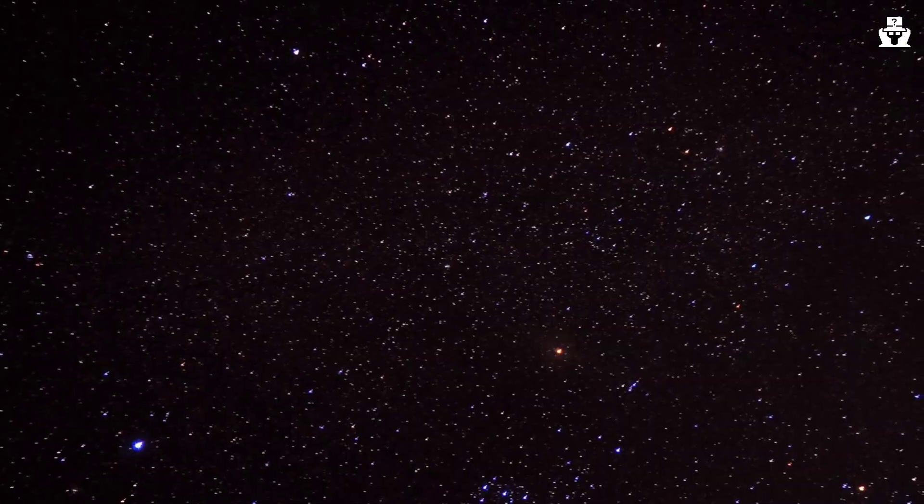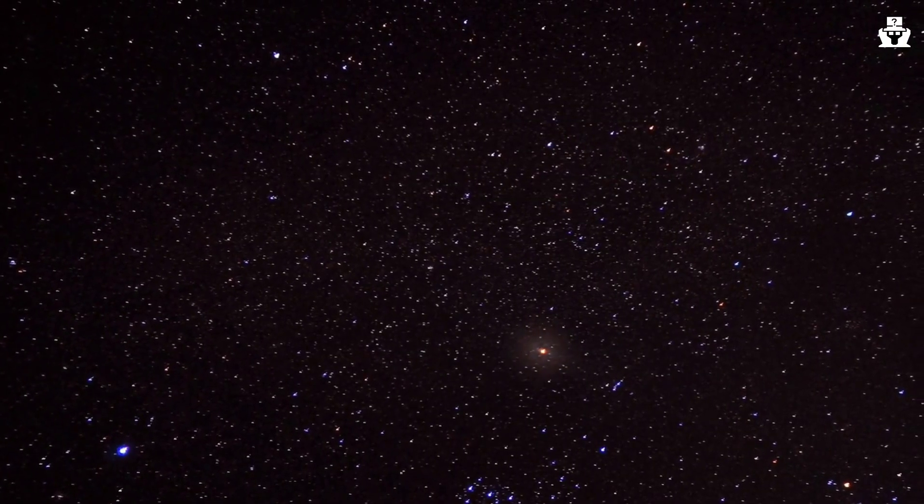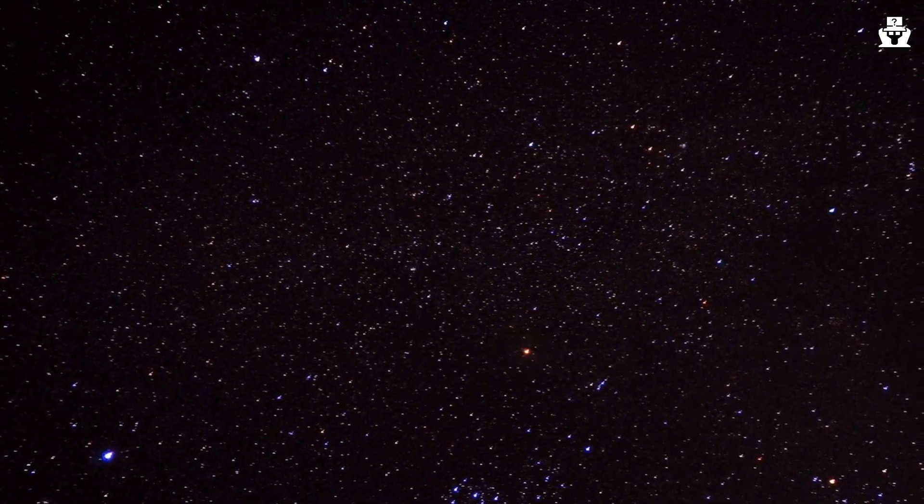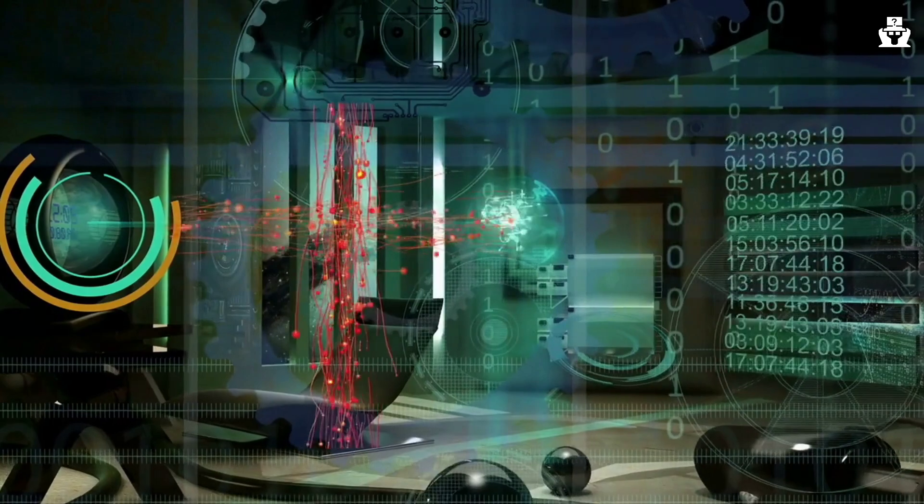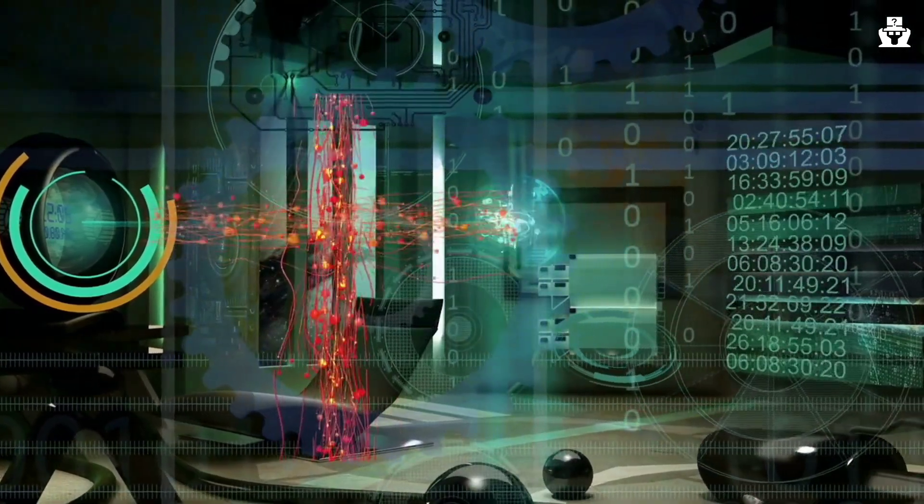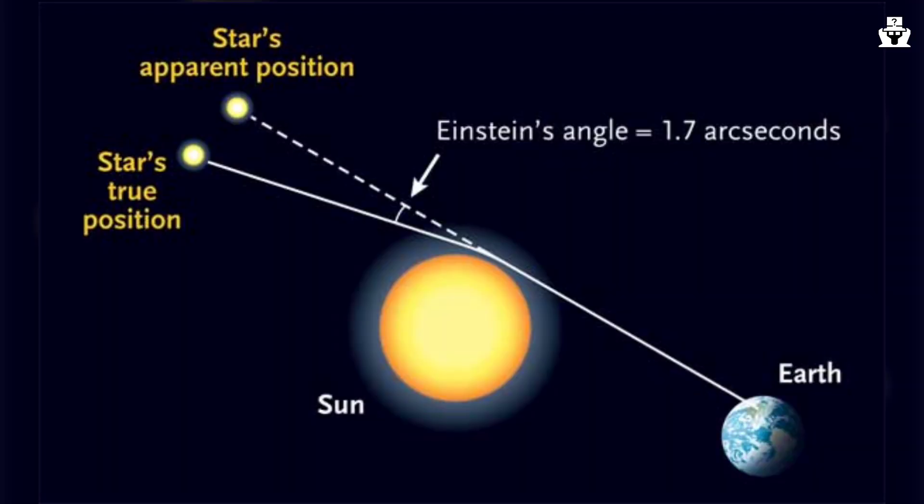Eddington's team observed the positions of stars that were visible near the Sun during the eclipse and compared them to their positions at night when the Sun was not visible. The team found that the positions of the stars appeared to shift slightly when viewed near the Sun, a phenomenon known as gravitational lensing. This was exactly what Einstein's theory had predicted, providing strong evidence in support of the theory.